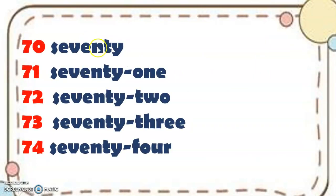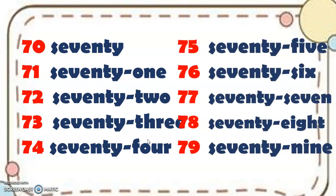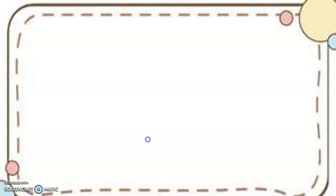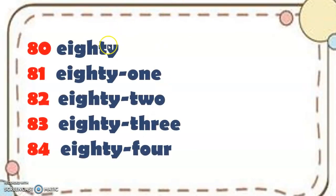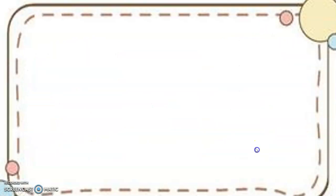Then we have 70, 71, 72, 73, 74, 75, 76, 77, 78, 79. Then we have 80, 81, 82, 83, 84, 85, 86, 87, 88, 89.